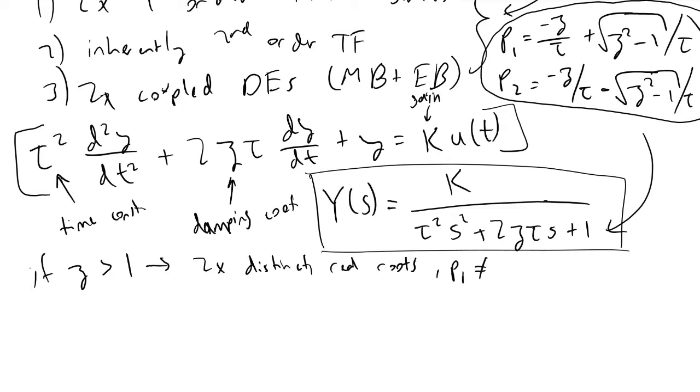All of these are real numbers. What that means, if zeta is greater than one, tells us that our system is overdamped.